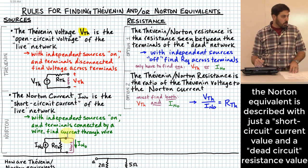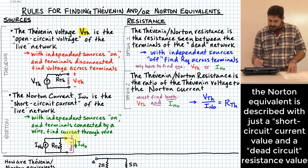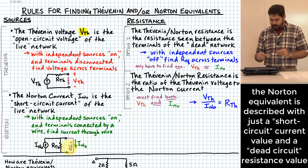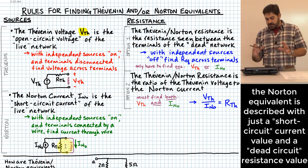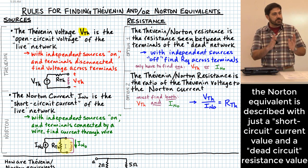If you're doing a Norton equivalent, it's similar, but in that case you actually short across the terminals. You create a path for current to flow with no resistance across the two terminals, and you evaluate how much current will flow through that short circuit based on an analysis of your complicated circuit network. The resistance value winds up being the same whether you are doing this for the Thevenin or the Norton equivalent.